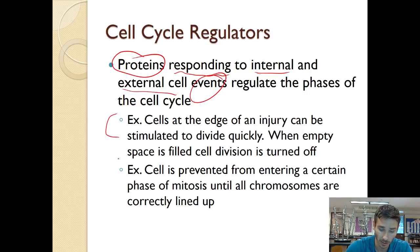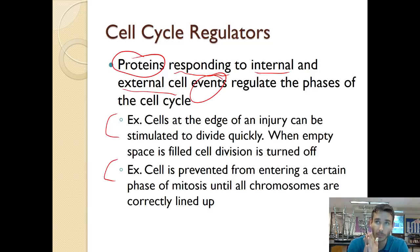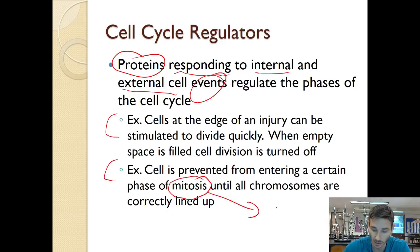Here are a couple of examples of when a cell might stop or start dividing. One example: when you have an injury like a cut, the cells at the edge of that cut are stimulated to divide quickly to repair the injury and seal up the cut. That's an example of an external signal for the cells around the edge of the injury to start dividing so that we can heal the wound. Another example involves mitosis — the technical term for cell division.